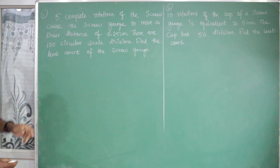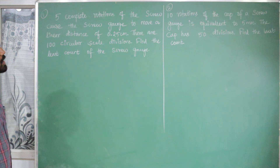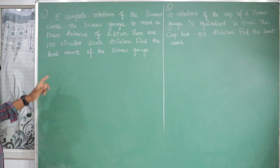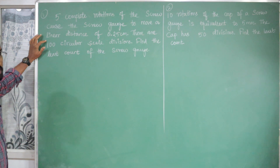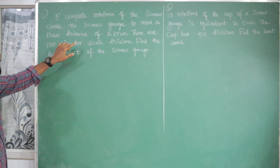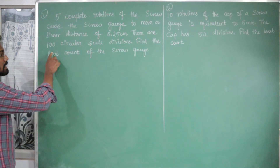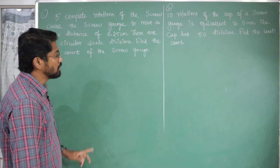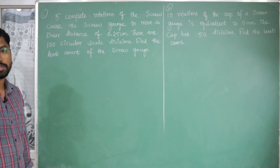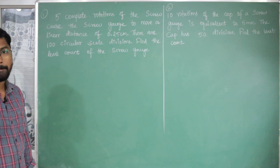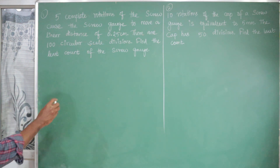Problem number one: five complete rotations of the screw cause the screw gauge to move a linear distance of 0.25 centimeter. There are 100 circular scale divisions. Find the least count of the screw gauge. Let me calculate the least count.